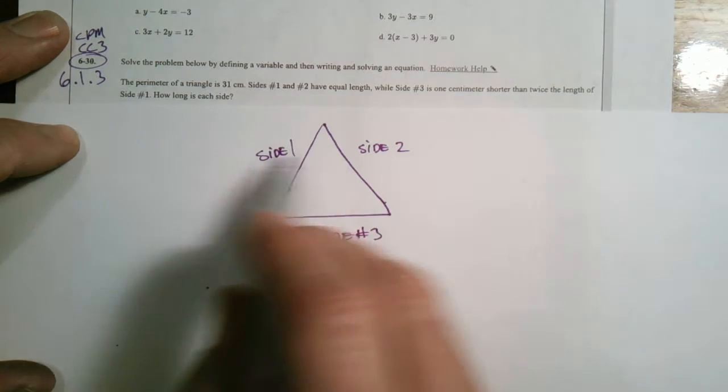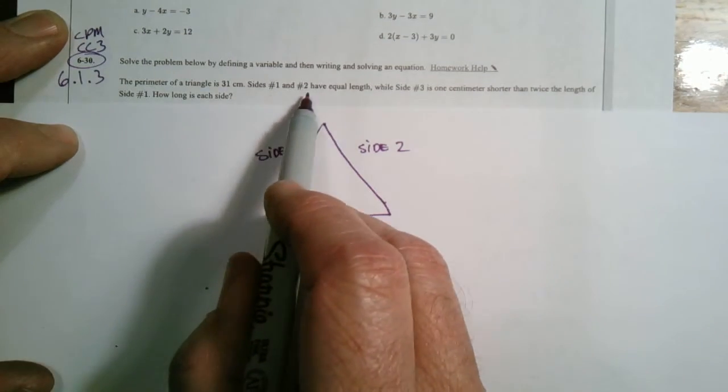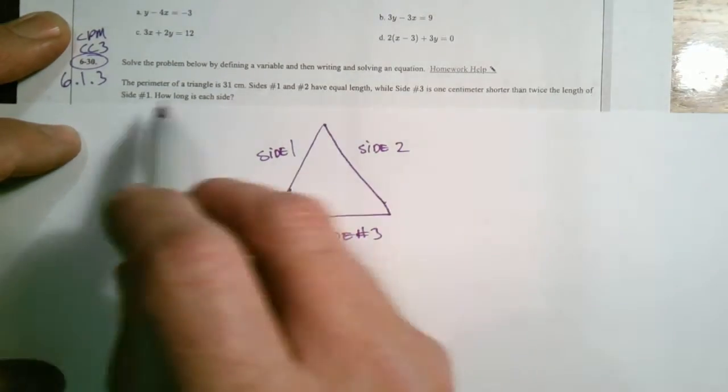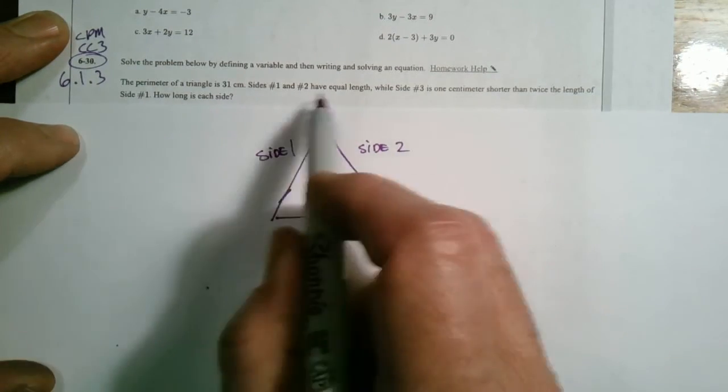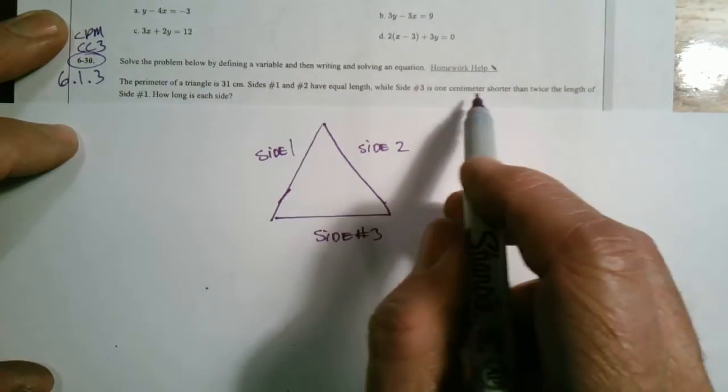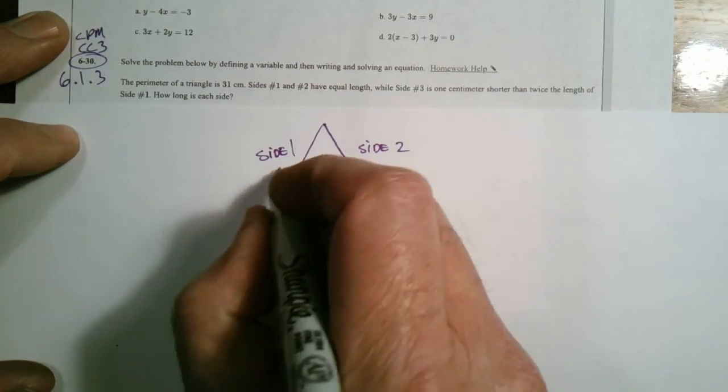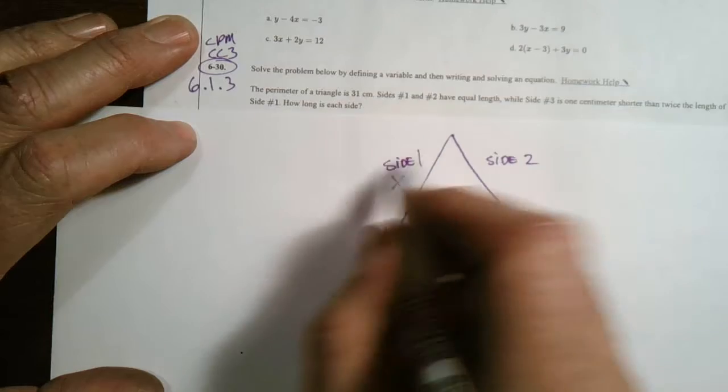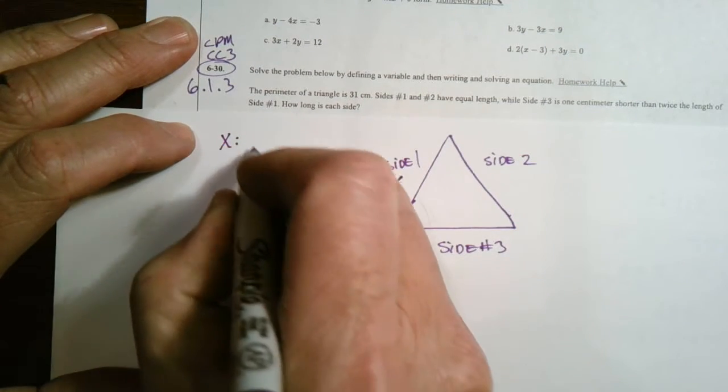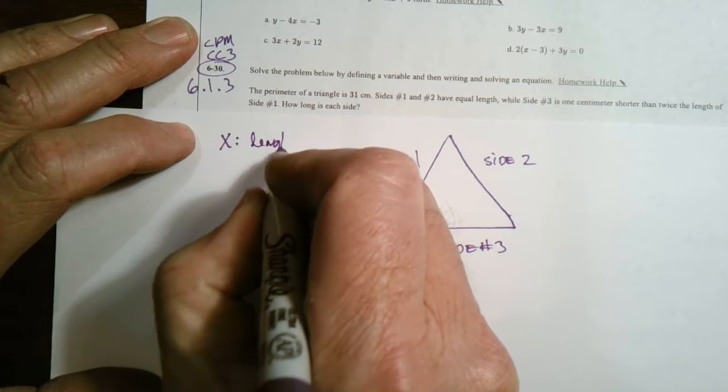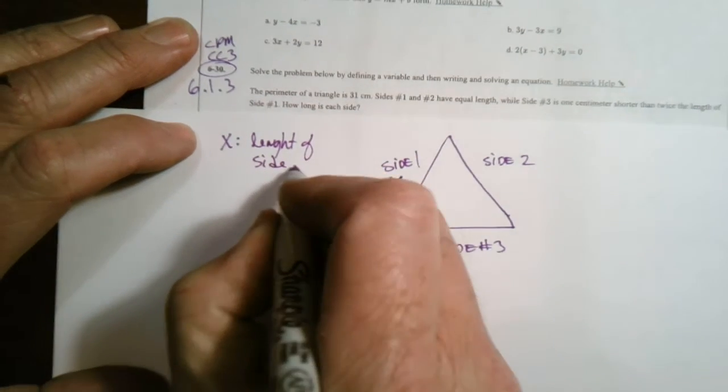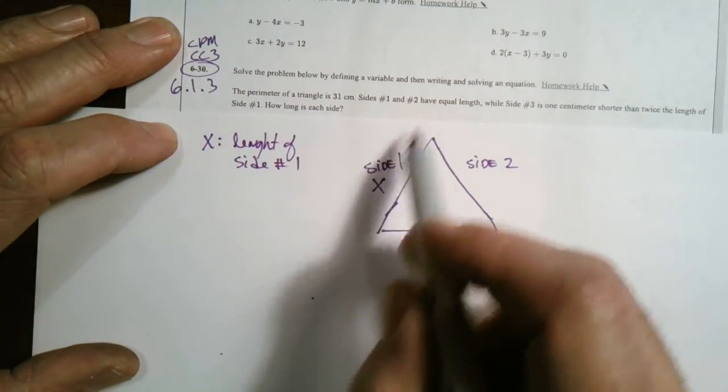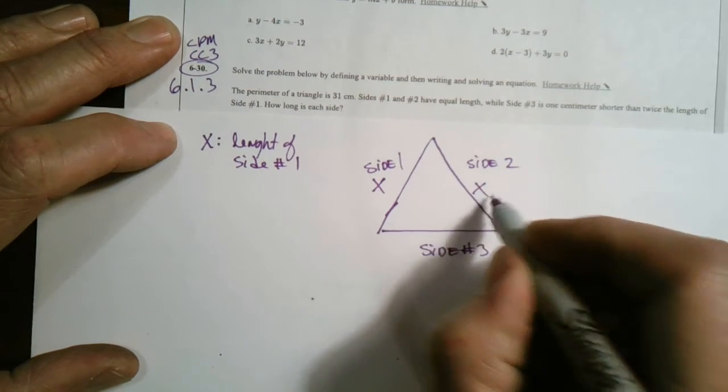So let's see what we have as far as how I can define these. It says sides 1 and 2 have equal lengths. Then it tells me that side 3 is 1 centimeter shorter than twice the length of side 1. So if I knew side 1, I could find side 2 as well as side 3. So that's where I'm going to define my variable. I'm going to call side 1 x. So x is equal to the length of side number 1. It does say that side 1 and 2 have equal length, so if side 1 is x, so is side 2.